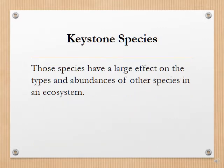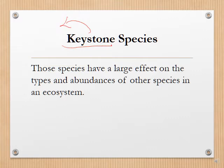Keystone species are those that have a large effect on the types and abundance of other species in an ecosystem. The term 'keystone' refers to a wedge-shaped stone placed at the top of a stone archway — if you remove this keystone, the entire arch collapses. Some ecologists hypothesize that in certain communities and ecosystems, certain species play a similar role. The effect that keystone species have in their ecosystems is often much larger than their numbers would suggest, and because of their relatively limited numbers, some keystone species are more vulnerable to extinction than others.